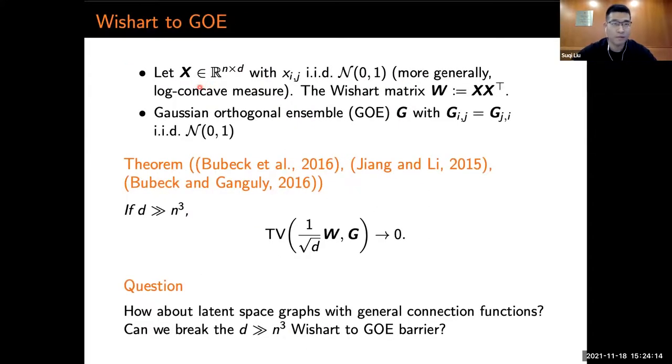Let's start with the matrix X, which is an N by D matrix with i.i.d. standard normal entries. More generically, it can be a log-concave measure. The Wishart matrix is defined by X X^T. A Gaussian orthogonal ensemble, or GOE, is a real symmetric matrix with the off-diagonal entries i.i.d. following a normal distribution.